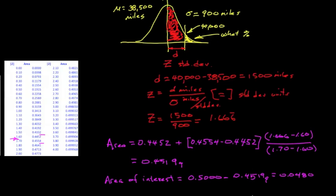Okay, so it's 0.0480, or 4.8%, so this area is 4.8%, and it tells us that that fraction of the population, that percentage of the population is represented by the tires in this yellow wing.